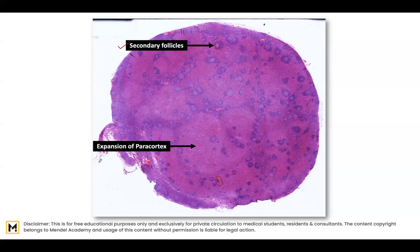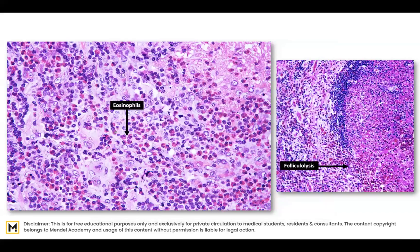The other feature is expansion of the paracortex. The paracortex is normally the home for T lymphocytes and represents the interfollicular area — the zone between two follicles. In Kimura disease, the paracortex is expanded and filled with eosinophils.